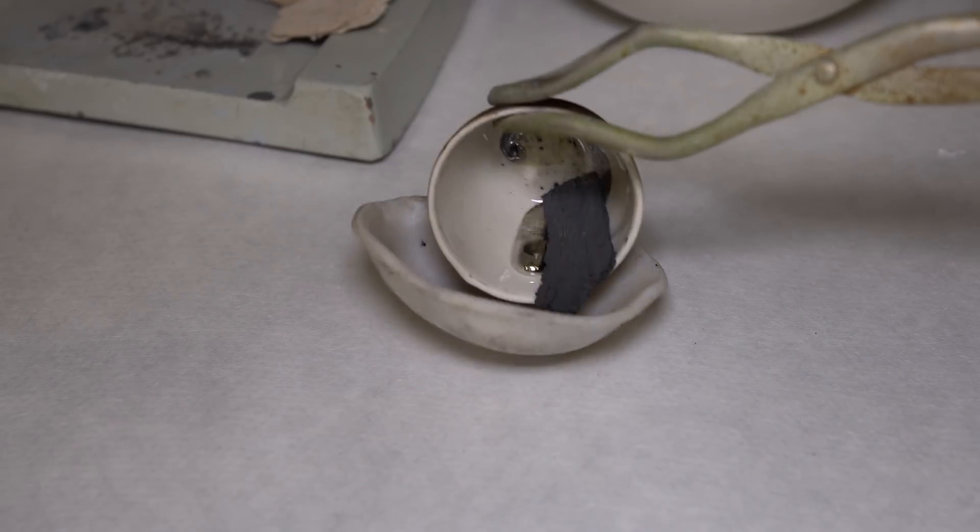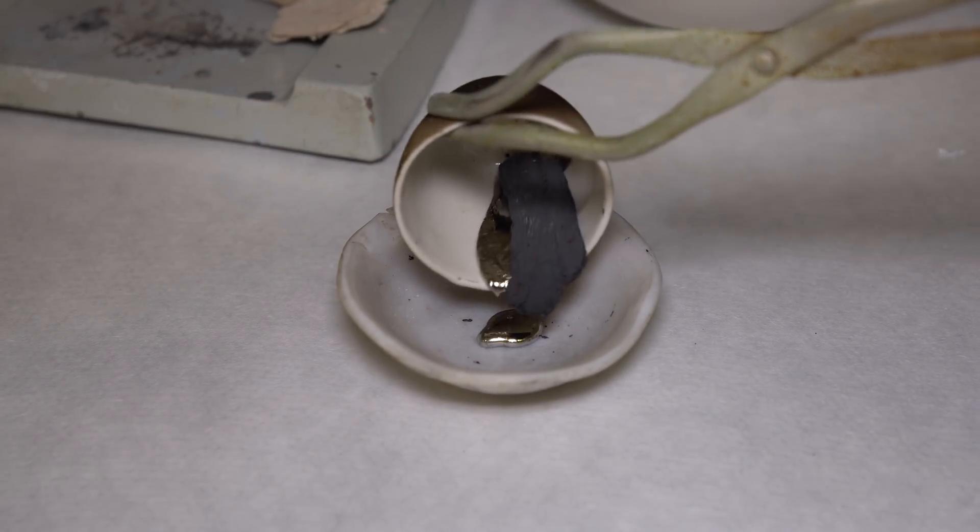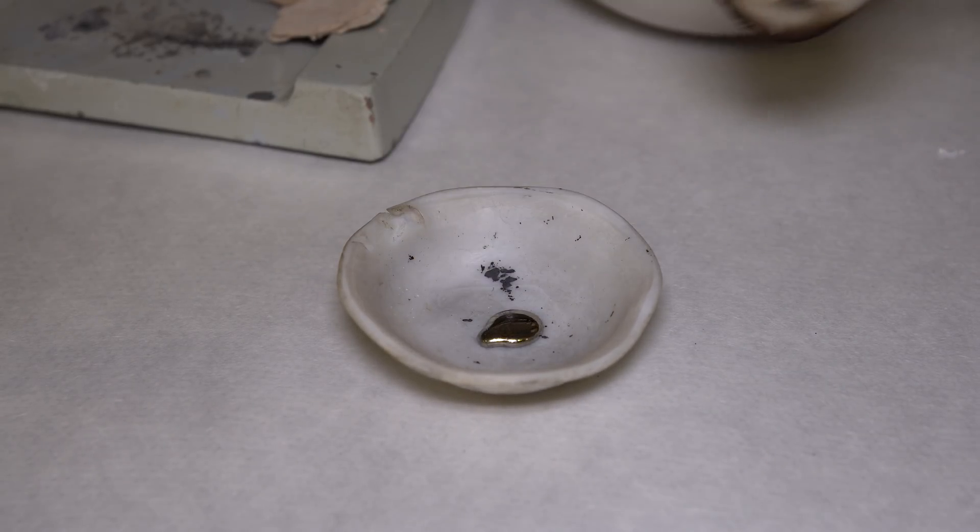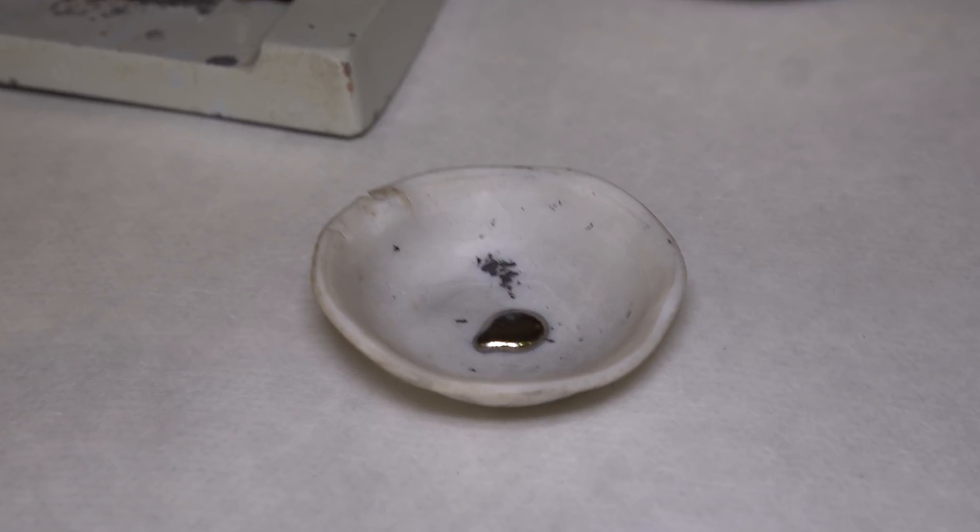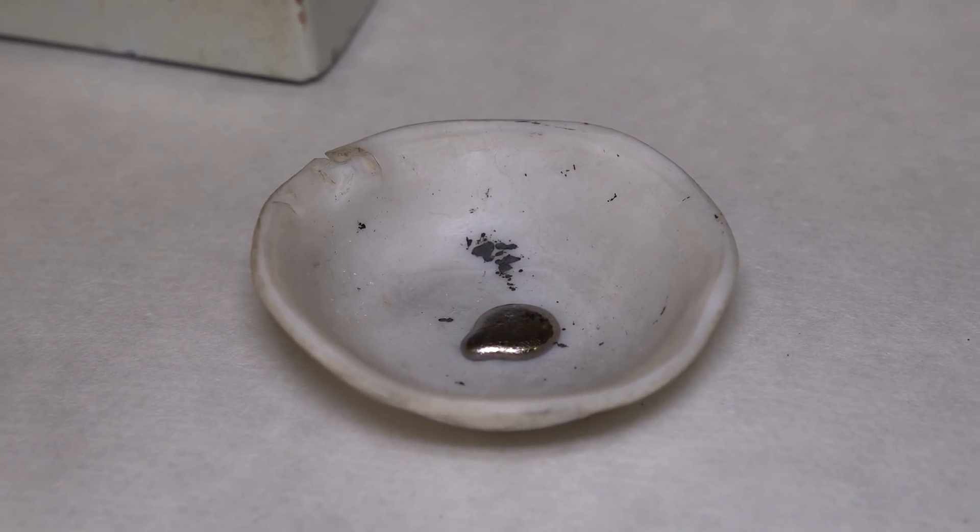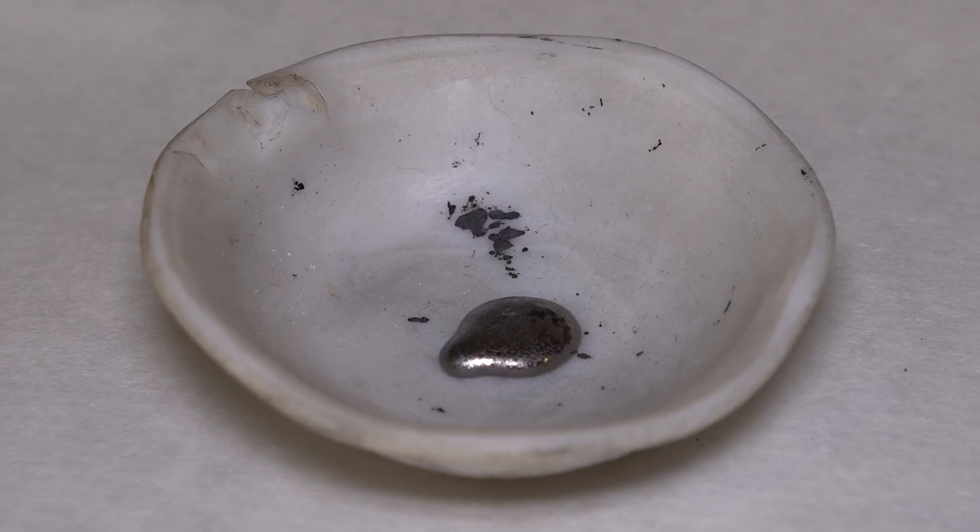It can easily be melted down because its melting point is just 304 degrees Celsius. Molten thallium oxidizes very quickly when exposed to air, covering in dark thallium oxide layer.